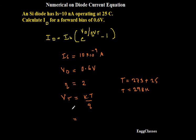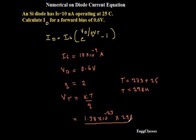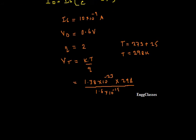Substituting all those values, I can find VT first. K is the Boltzmann constant and its value is 1.38 into 10 to the power minus 23. T is 298. The entire thing gets divided by the charge of the electron, that is 1.6 into 10 to the power minus 19. Solving this using the calculator, we get VT equal to 0.0257.